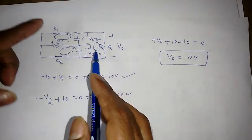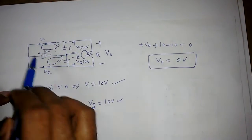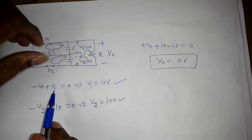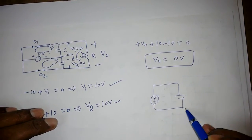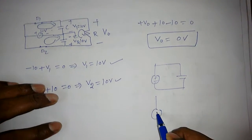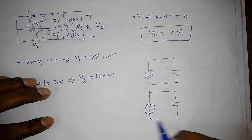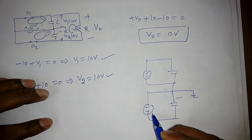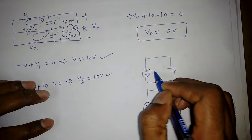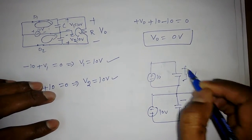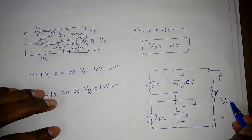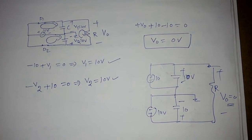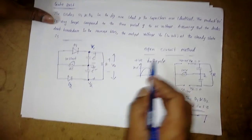So whenever it is reverse biased, everything is open, no problem. But the moment it is forward biased, both will be short circuit. This 10V will be simply across this capacitor, plus minus 10V. Similarly, one more capacitor here, minus plus 10V. Both are grounded. Now if you take the difference between these two voltage levels, which is V0, it will be simply 0V. This is how we use the open circuit method whenever there is a diode and we need to find the output voltage.